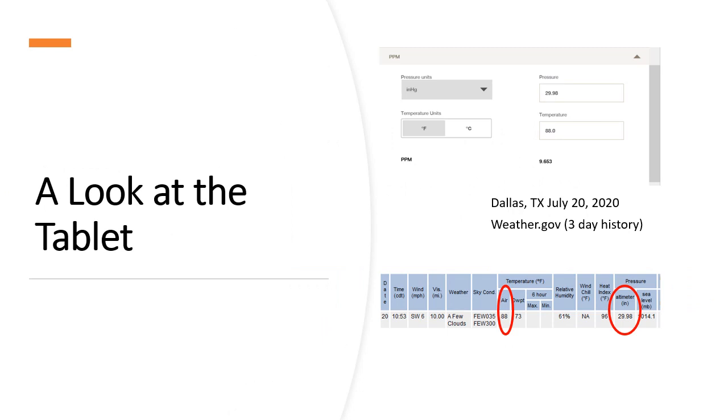And what I did is I went to weather.gov and for where I'm at in Dallas, Texas, I went to the three-day history of the zip code I was at and I found that the air temperature was 88 degrees Fahrenheit. So I typed that in.